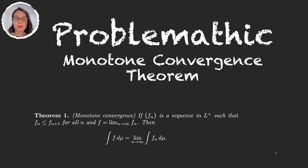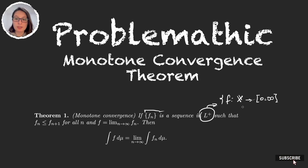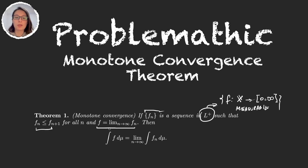Let's start with the theorem. In the Monotone Convergence Theorem we have a sequence of functions in L+, where L+ is the family of functions from our space to [0, ∞), so non-negative functions that were measurable. We have a sequence of non-negative measurable functions that are also increasing and for which the limit is some function f — so we're trying to calculate the integral of f and we were able to approximate this function with an increasing sequence of other functions.